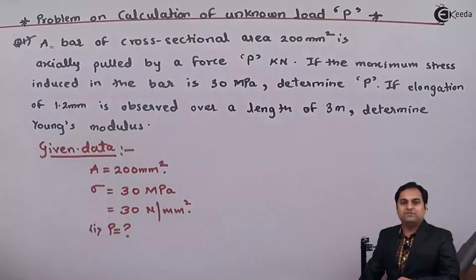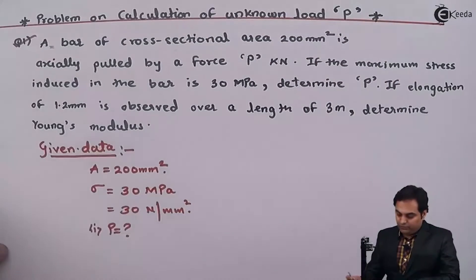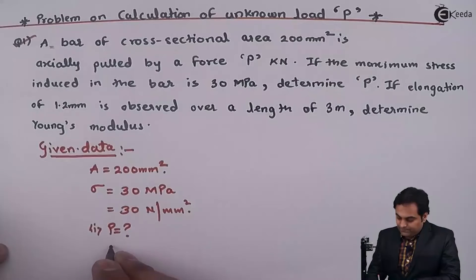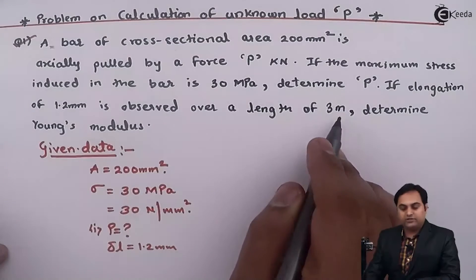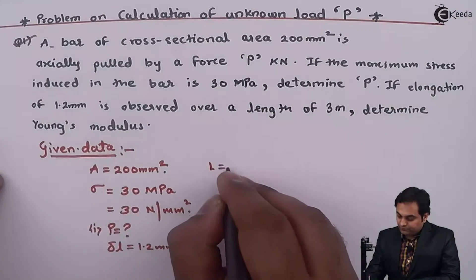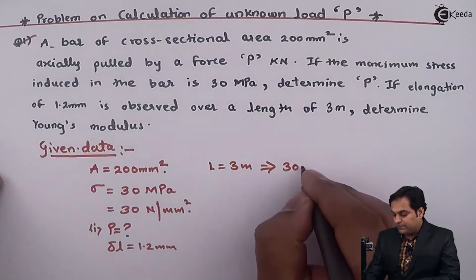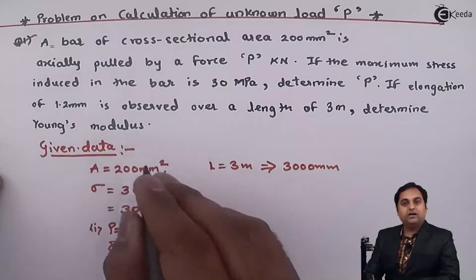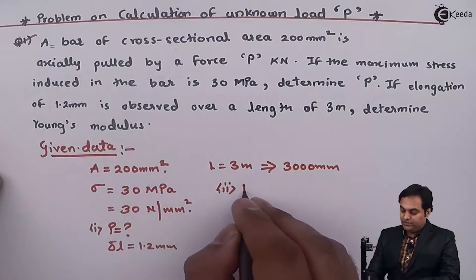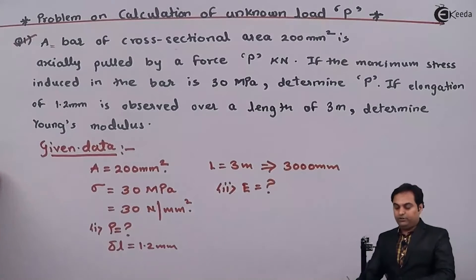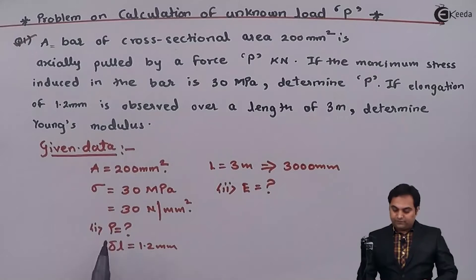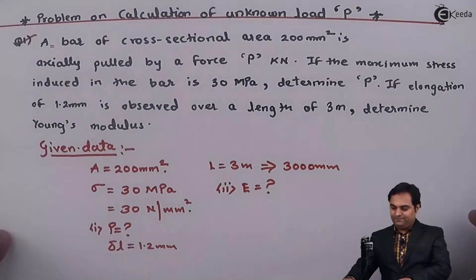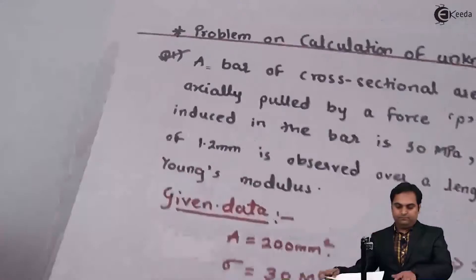Elongation delta L = 1.2 mm is observed over a length of 3 meters, so L = 3 meters, which is 3000 mm. The second question is to calculate capital E, the modulus of elasticity, also known as Young's modulus. With the data available, let us find the unknown load P first.